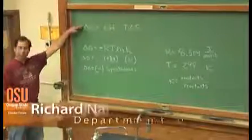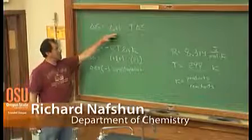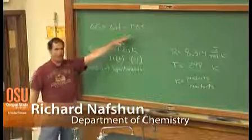I went ahead and put the Gibbs equation up on the board, and it's delta G, the free energy, is equal to delta H the enthalpy minus temperature times delta S.